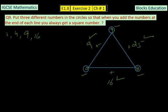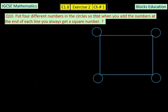In question number 10, it says put four different numbers in the circles so that when you add the numbers at the end of each line you always get a square number.